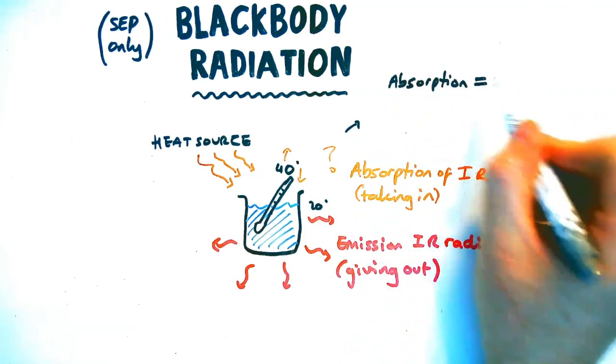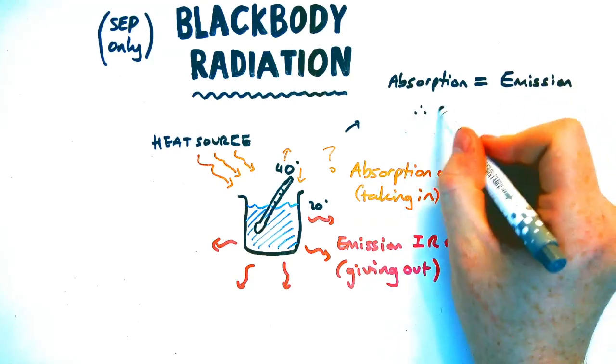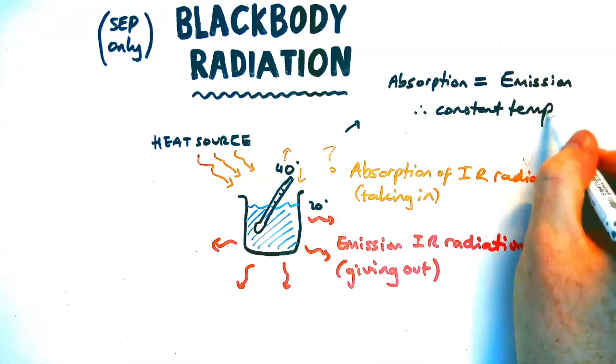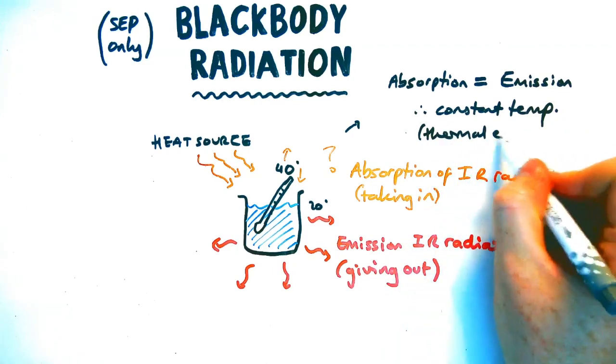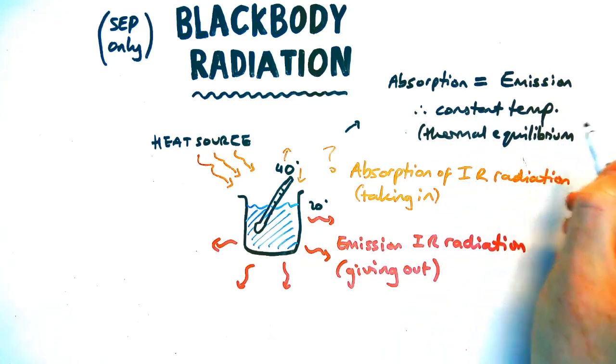If the absorption is equal to the emission of the object, that means that the temperature is constant. That's called thermal equilibrium, just kind of like equilibrium of forces, two things are equal.